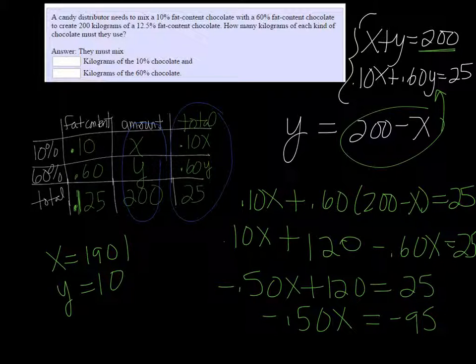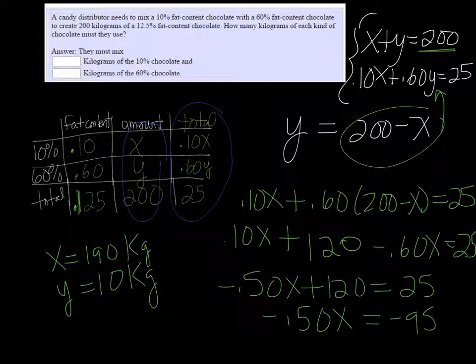This makes sense because if we start with a 10% fat bar and we're trying to get a 12.5% fat bar, we only need to add a little bit of that high percentage bar to make it. So we'll melt both of those chocolates down: the 190 kilograms of the 10% and the 10 kilograms of the 60%.